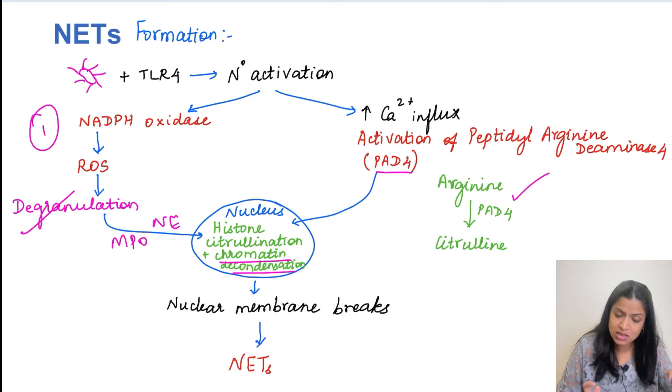Firstly, there will be this chromatin decondensation and the second thing will be histone citrullination. So these two things happen inside the nucleus and this will in turn lead to the nuclear membrane to break.